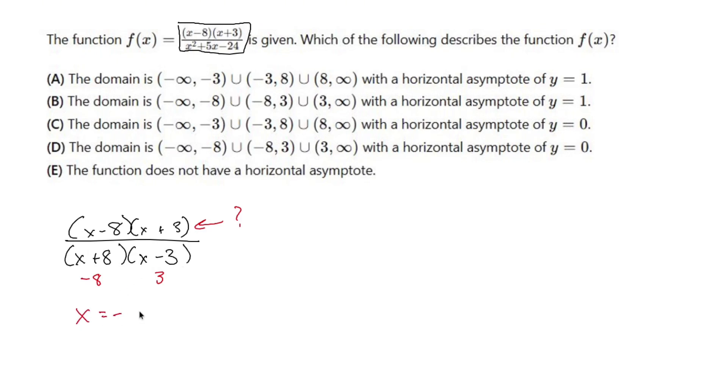So I am not allowed to plug in negative 8 and 3, which means I am allowed to plug in everything from negative infinity all the way up to negative 8, not including negative 8. So from negative infinity parentheses to negative 8 parentheses, all the way up to 3, right? And then union again, let me get rid of that comma, union again from 3 to infinity. So that is the domain that I'm allowed to use.